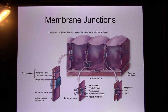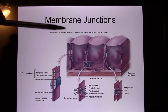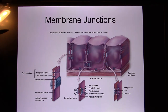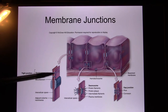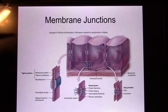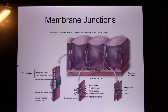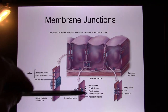Skin cells — epithelial cells — tie together. They use three different kinds of junctions, like three different kinds of pins. They have the tight junction, desmosome, and gap junction. These junctions were first identified in epithelial tissue, and some of them, like gap junctions and desmosomes, have also been found in cardiac muscle.